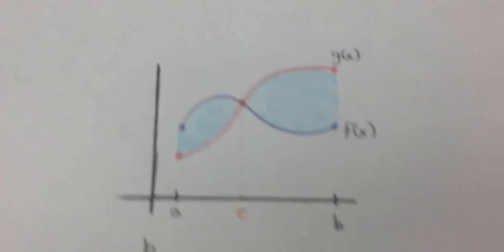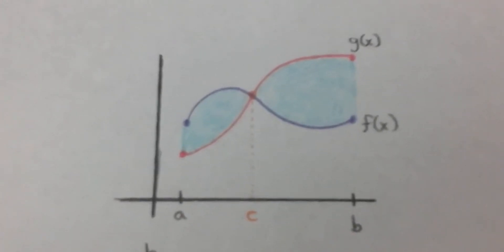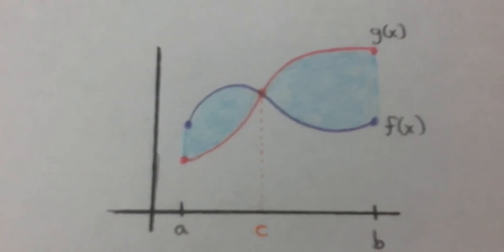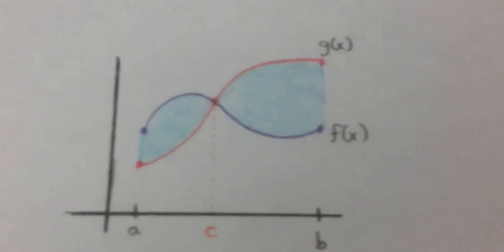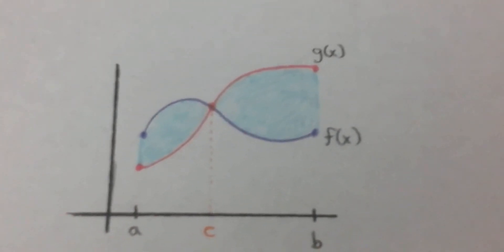And that is how we answer a problem where curves cross each other. On one part of the interval, one function is above another one, but then they cross, and on the latter part of the interval, the second function is now above the first function.